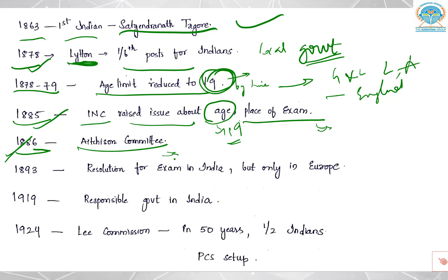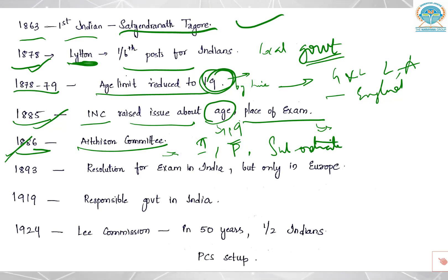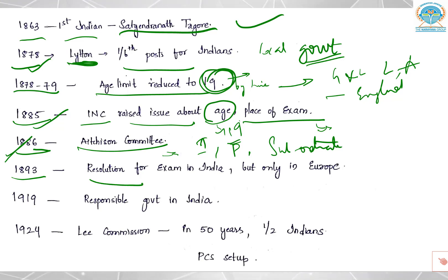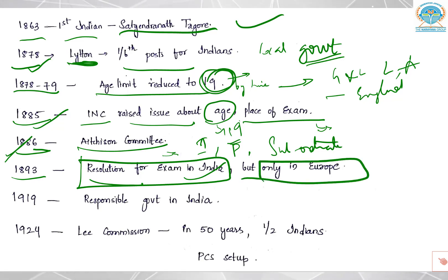The Aitchison Committee talked about different kinds of services — there should be imperial services, provincial services, and subordinate civil services. In 1893, a resolution was passed for exams to be held in India. But again it did not come into reality — the exams happened only in Europe even by the year 1893.